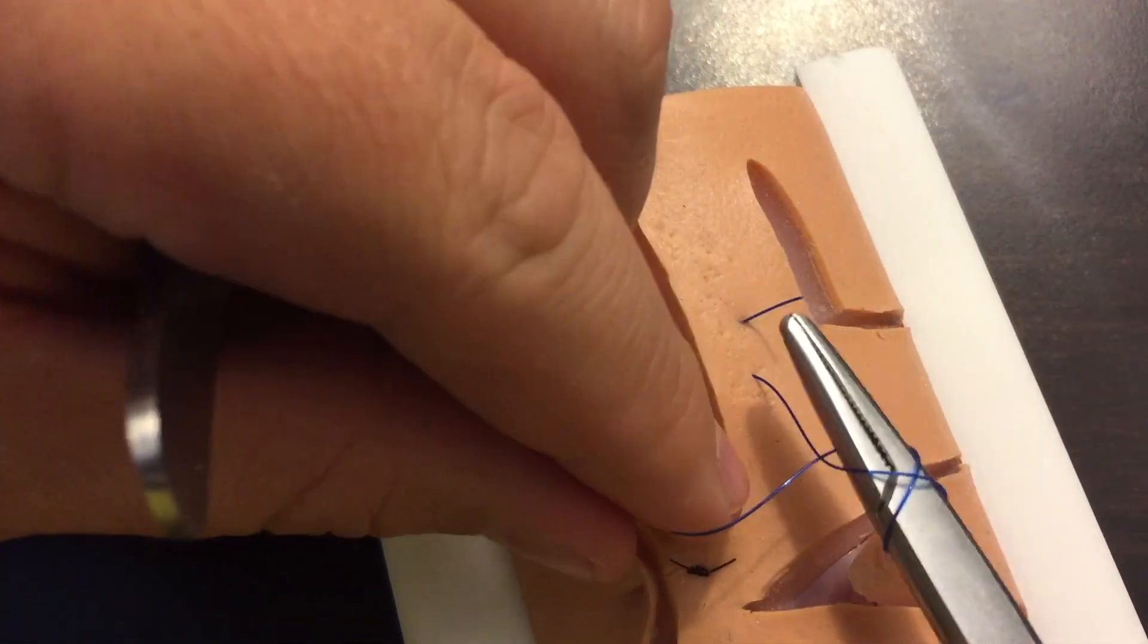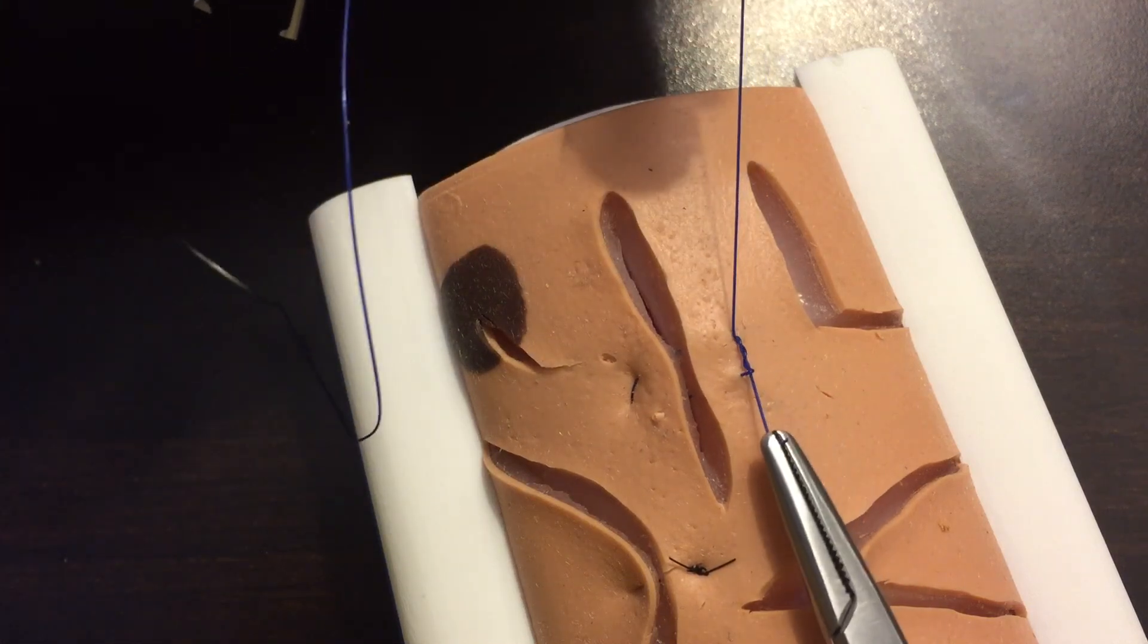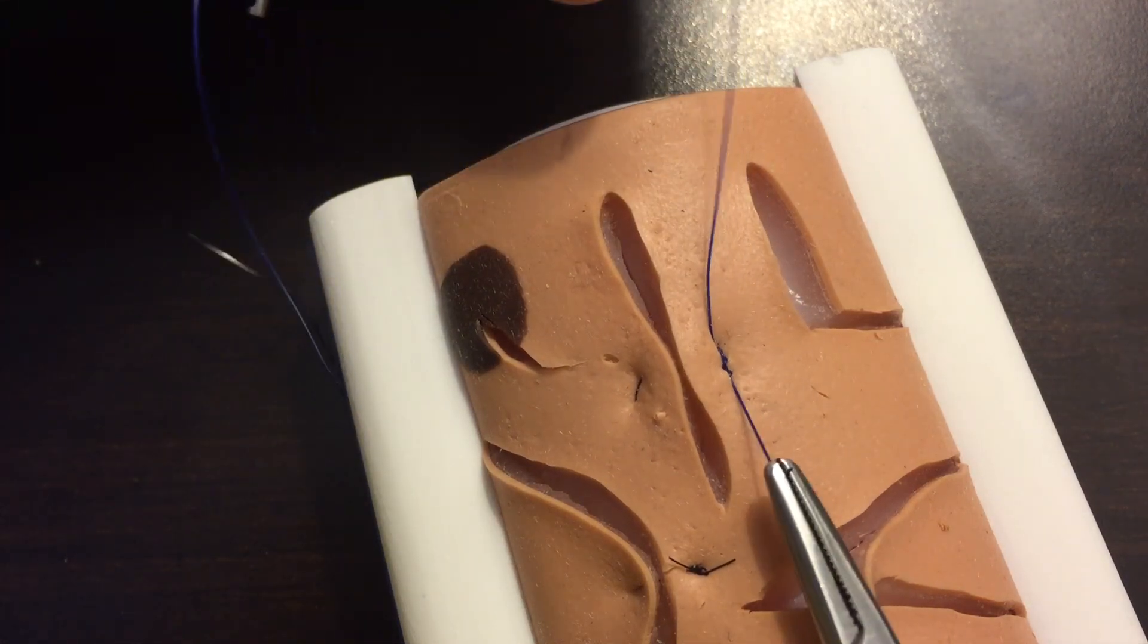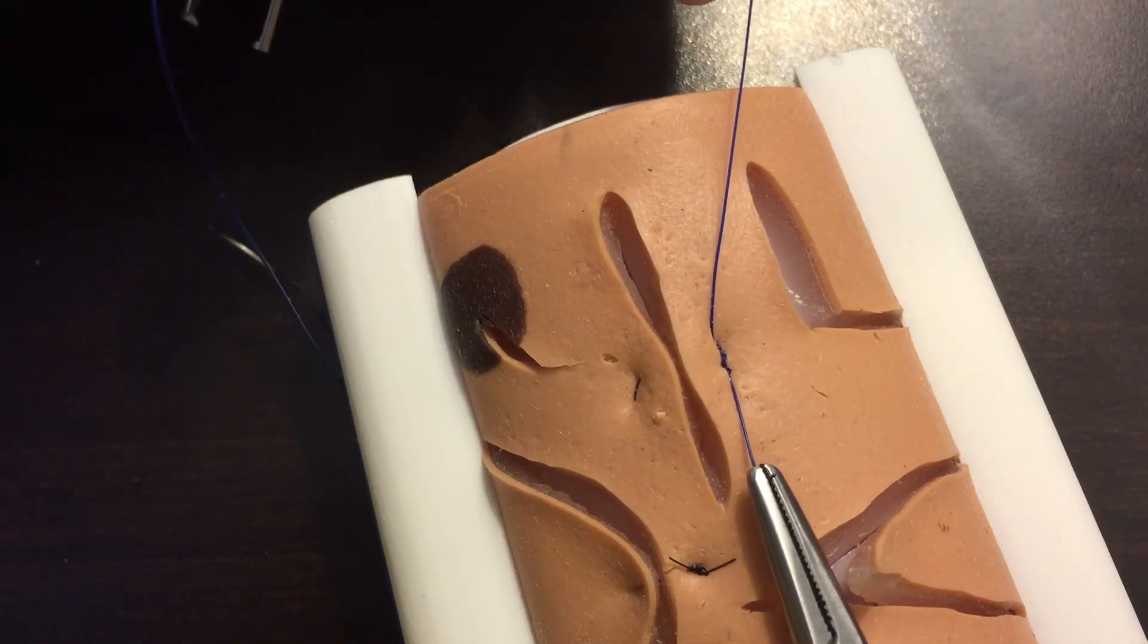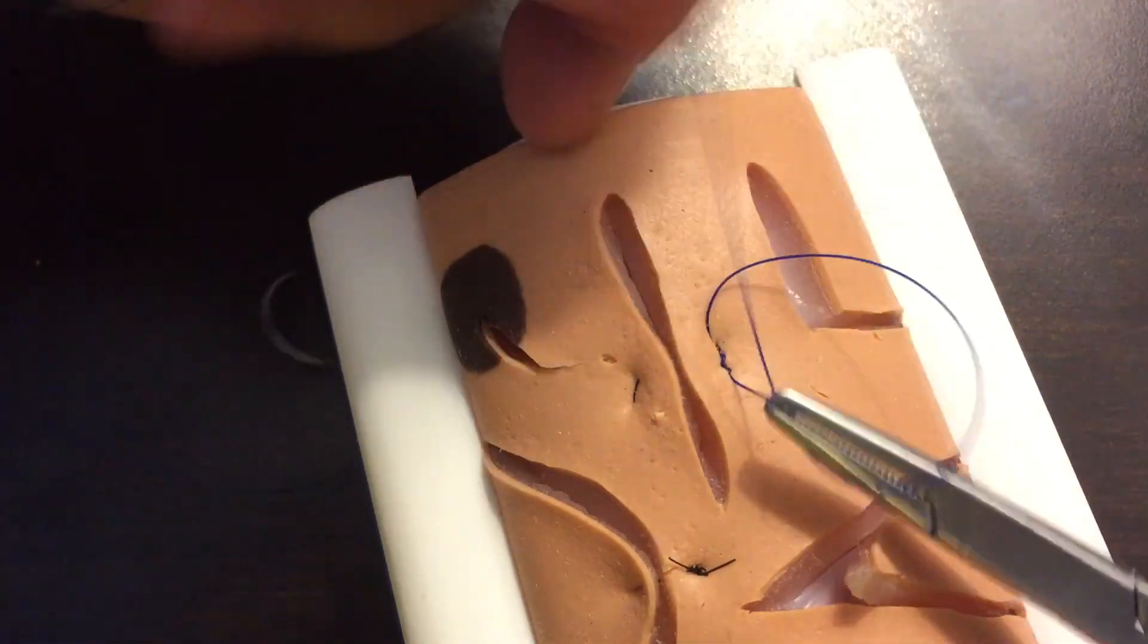Now we're going to use our needle driver to do an instrument tie. You can see that when we do this, it's going to pull the skin edges close together. It does a good job approximating the skin edges and everting the skin edges.